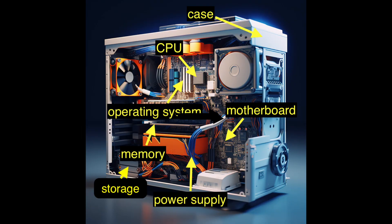Computer parts: Think of the computer case like the outer shell of a robot — it holds all the important robot parts. Power supply is like the robot's battery; it gives energy to the robot so it can move and do things. The motherboard is like the robot's brain where all the thinking happens, and it has memory too. The CPU — central processing unit — is the robot's super smart brain part; it thinks really fast and follows your instructions.